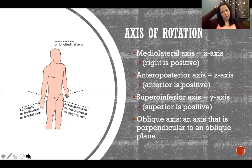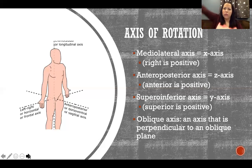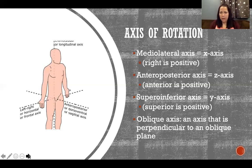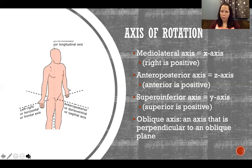Let's go through some examples. For adduction and abduction of the glenohumeral joint — the ball-and-socket shoulder joint — the axis of rotation sticks straight out anteriorly, so that is the anteroposterior axis. If asked on a homework assignment, quiz, or exam: around what axis does abduction of the glenohumeral joint take place? The answer is the anteroposterior axis.